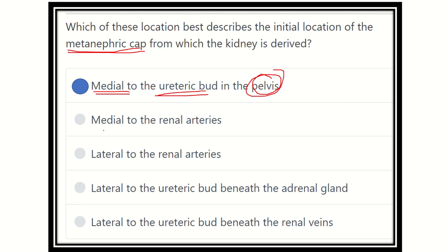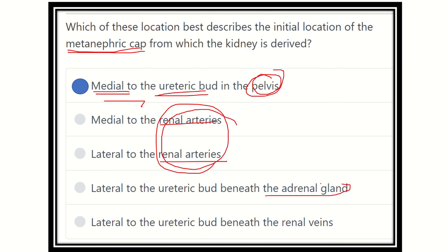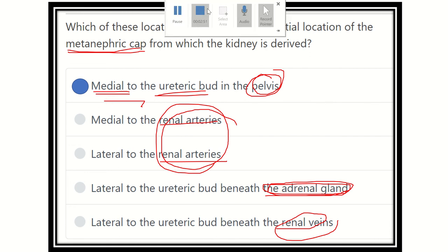The metanephric cap is medial to the ureteric bud and located in the lower part, meaning in the pelvis. The renal arteries are located higher up, so they are not compatible. Lateral to the ureteric bud beneath the adrenal gland is not true, as the adrenal gland is not derived from this source. Beneath the renal vein is also not possible since the vein and arteries are located higher. Therefore, our answer is: medial to the ureteric bud.